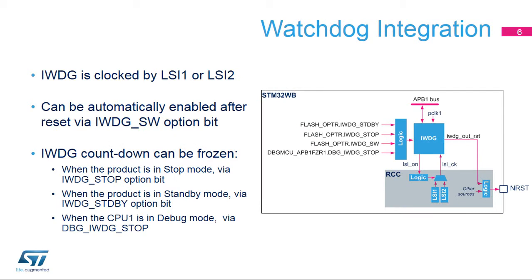The STM32WB microcontroller includes an Independent Watchdog, or IWDG. The IWDG can be clocked by either LSI-1 or LSI-2. The IWDG will use whichever is enabled. If both LSI are disabled and the IWDG is enabled, the LSI-1 is forced on.